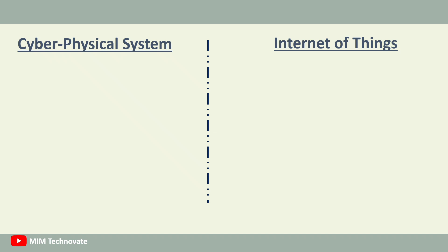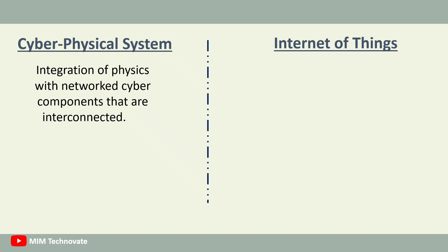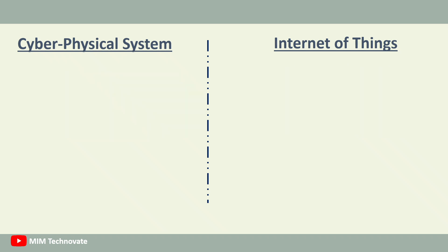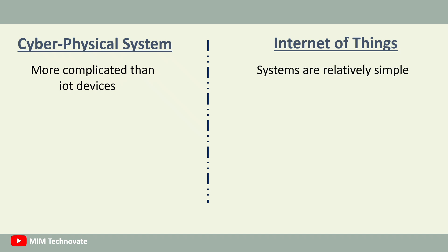Cyber-physical system is the integration of physics with networked cyber components that are interconnected. On the other hand, Internet of Things includes all of the physical devices that are connected to the Internet. Cyber-physical systems are more complicated than IoT devices, while Internet of Things systems are relatively simple.